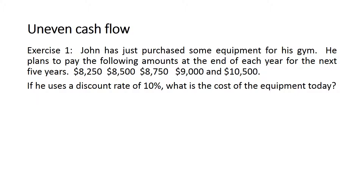If he uses a discount rate of 10%, what is the cost of the equipment today? In this example they are asking us for the cost of the equipment today, so we are trying to solve for the present value. However, we cannot use the present value of annuity since the amounts are not the same — we have uneven cash flows, so we will have to use the present value for each cash flow separately and then find the summation.